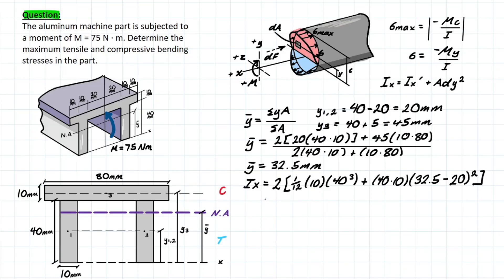Close that all up, and we do the same for the third shape. We're going to have 1/12, the base, which is 80, times the height of 10 to the power of 3, plus the area, 80 times 10, and a similar thing. Now we have to find what this distance is here. So we're going to be taking y3, since it's the larger value, and subtracting y bar. So we have 45 minus 32.5, squaring that, and we're left with a final inertia value or moment of inertia value of 3.633 × 10^5 millimeters to the 4.